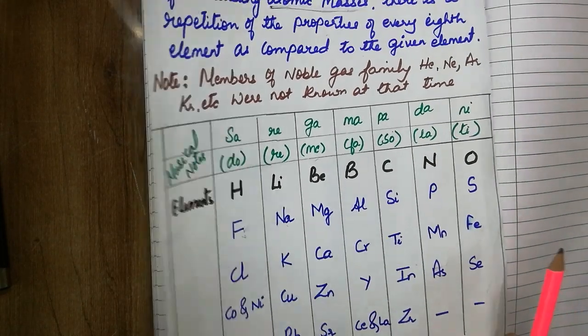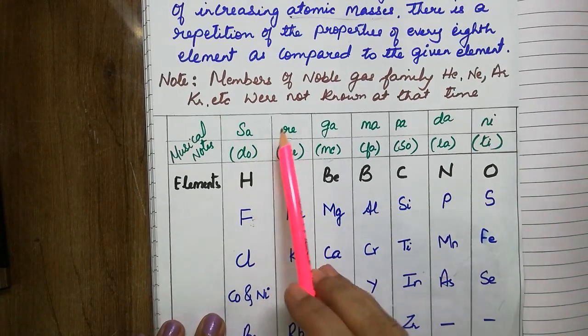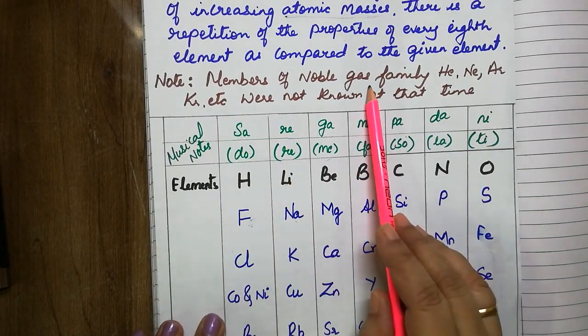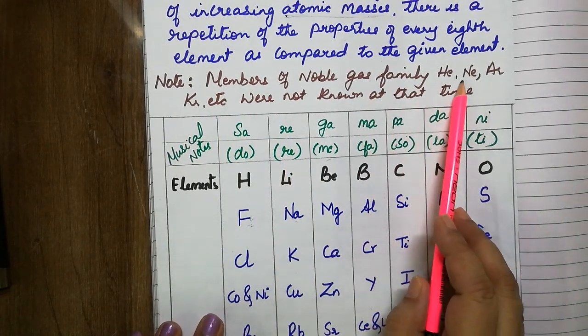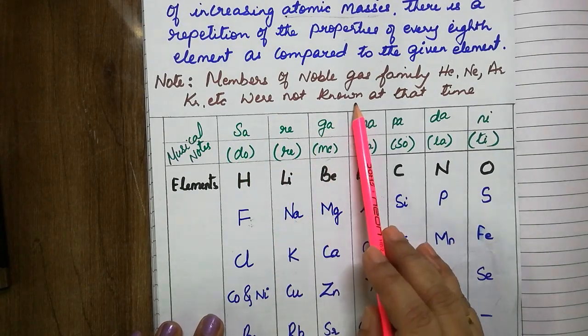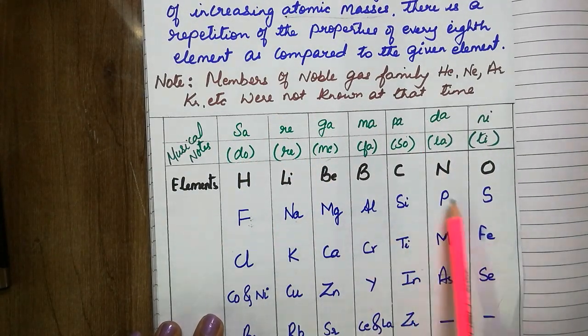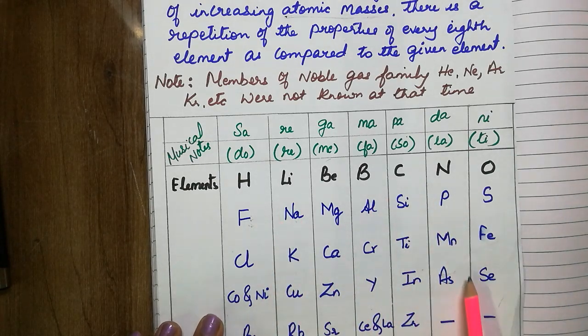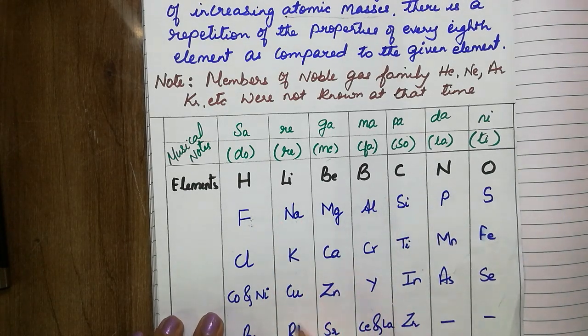Now we need to note here, members of noble gas families, that is helium, neon, argon, krypton, etc., were not known at that time. So we cannot see helium and all mentioned in his table.